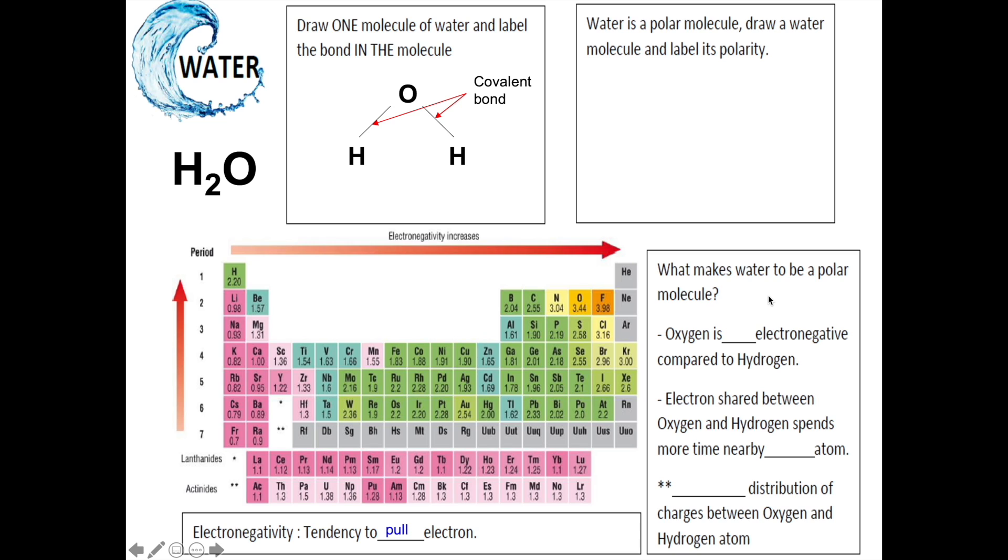To answer this question, what makes water to be a polar molecule, we simply say: oxygen is more electronegative compared to hydrogen. Or, oxygen has stronger ability to attract or to pull electrons compared to hydrogen. Therefore, the electrons shared between oxygen and hydrogen atoms will spend more time nearby oxygen atom. This results in unequal distribution of charges between oxygen and hydrogen atom.